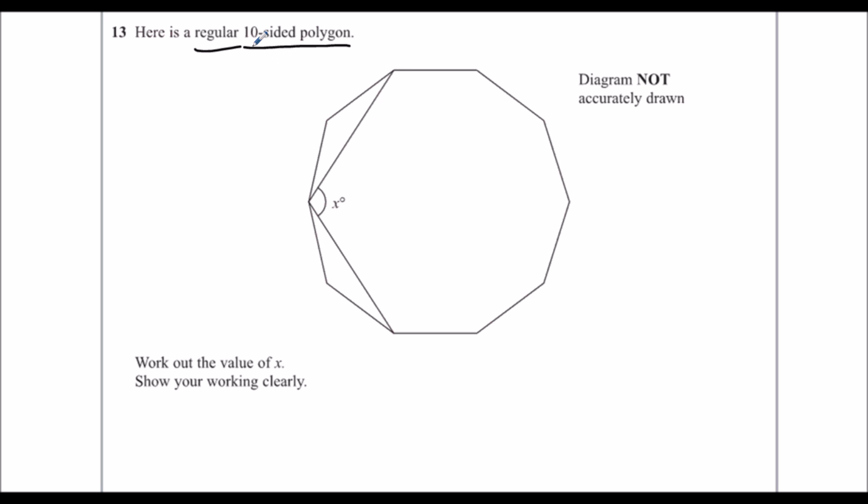Whenever we've got these regular polygons, we can work out the interior and exterior angles. If I work out the exterior angle, exterior are these ones. And there's going to be ten of them because it's got ten sides.